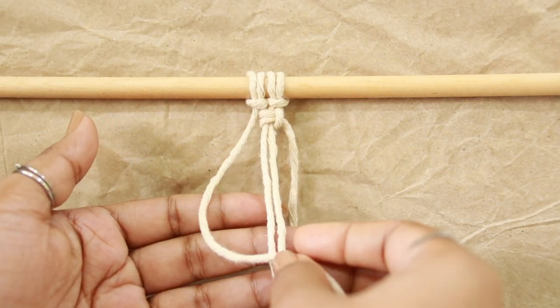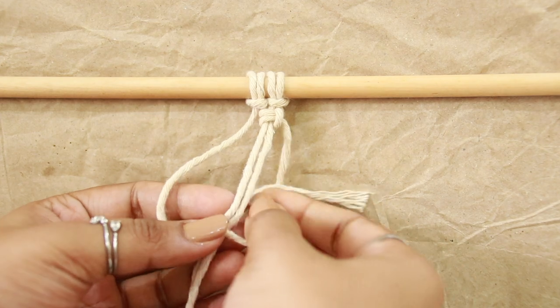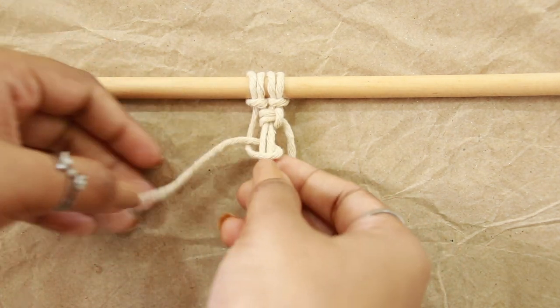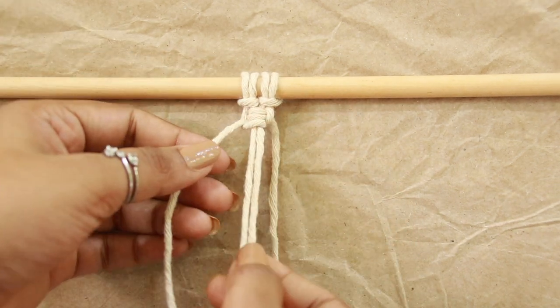Similarly, repeat the same on the other side. When you pick the left side working cord, pass over and under the middle filler cords through the loop and tighten the knot.